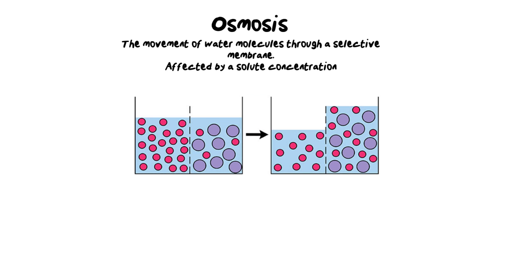Osmosis specifically is the movement of water molecules through a selective membrane, and it's affected by the solute concentration. In tests, it's important to note that osmosis is a type of diffusion, and water is the only substance that gets its own name due to its membrane privileges. If asked, you must use the word osmosis — you cannot simply say the diffusion of water.